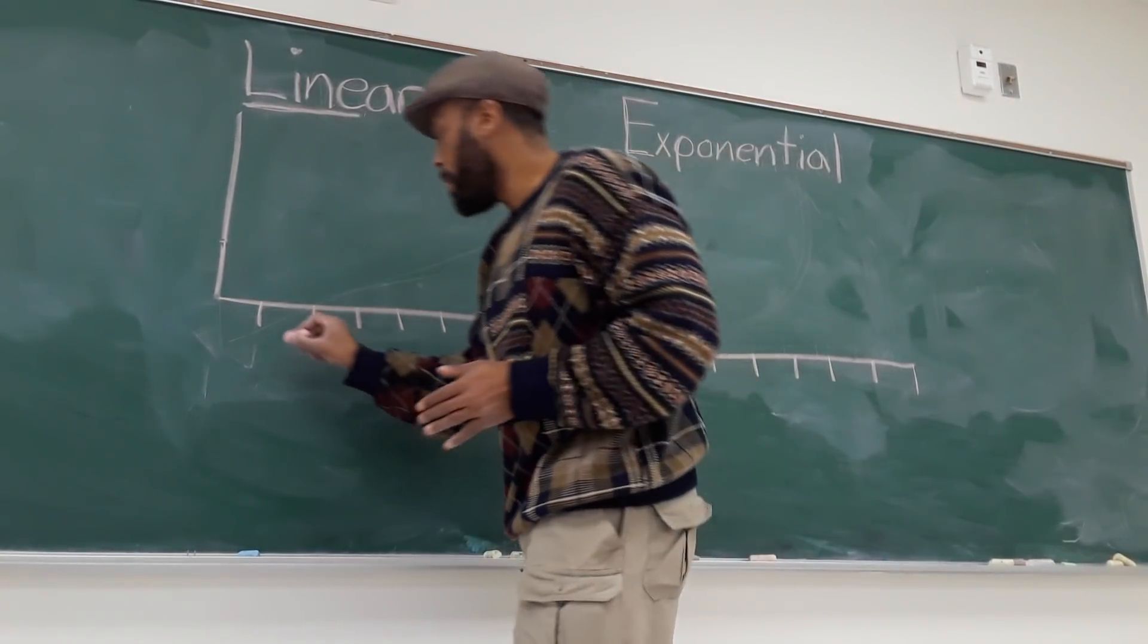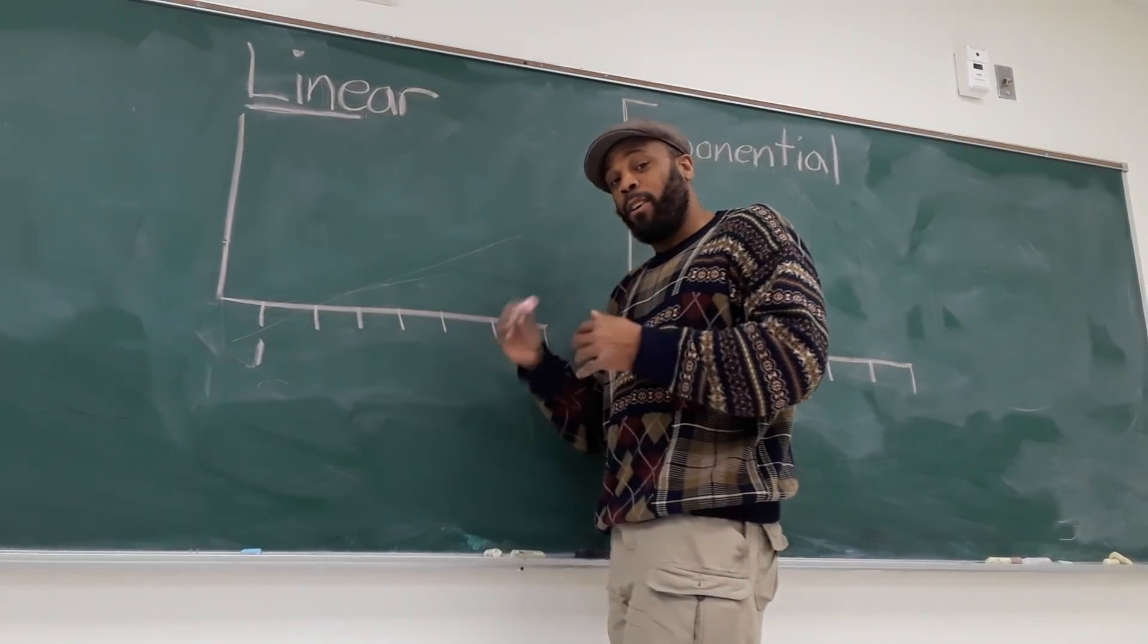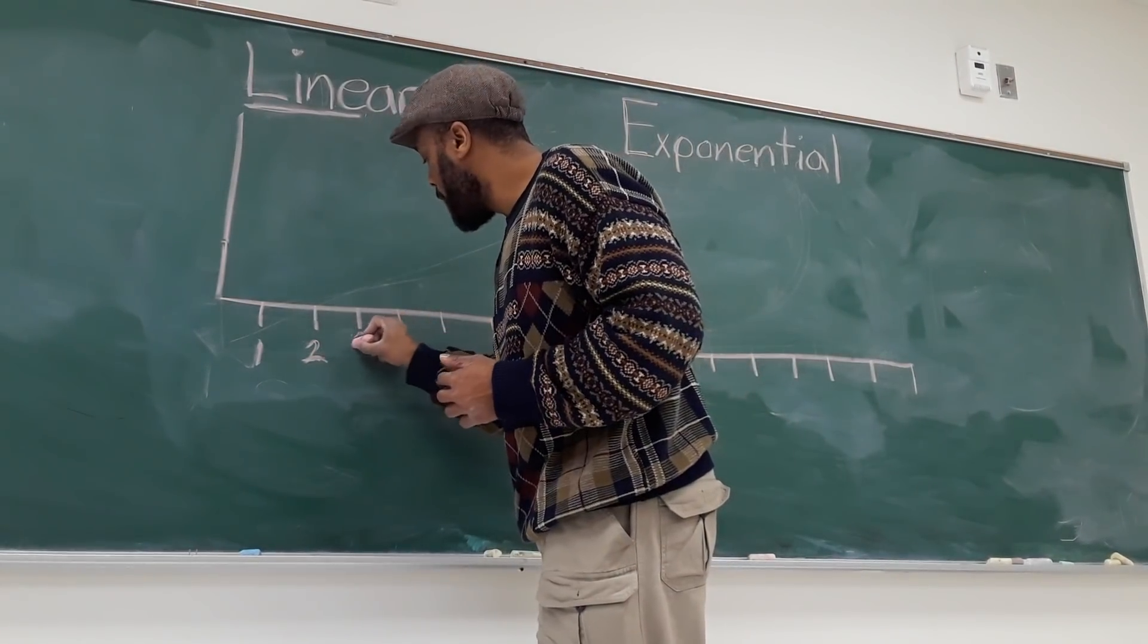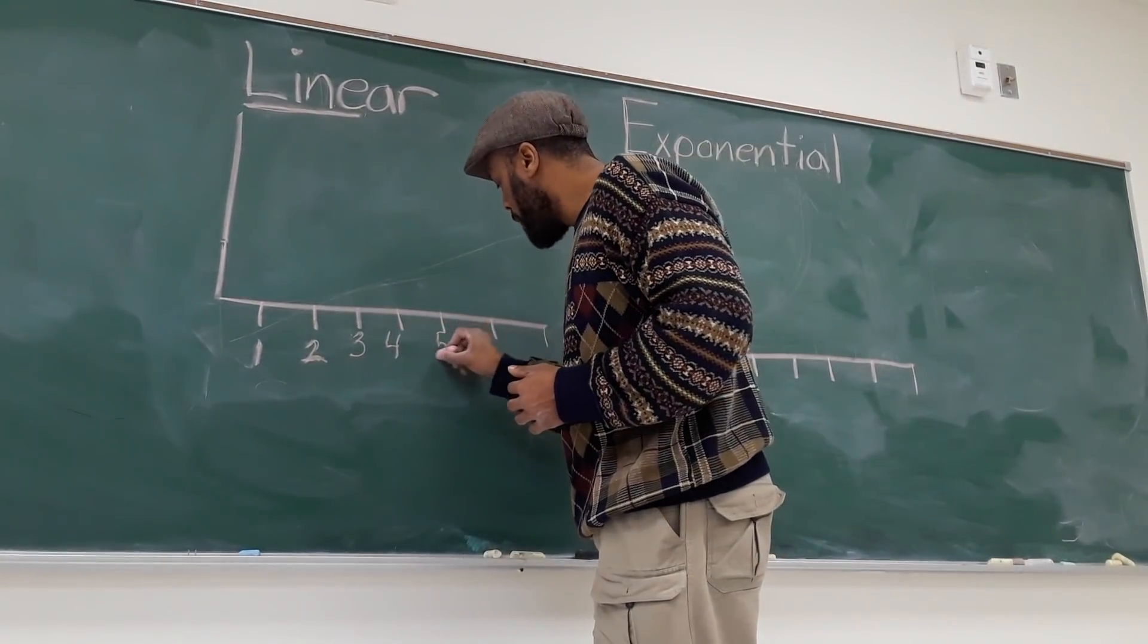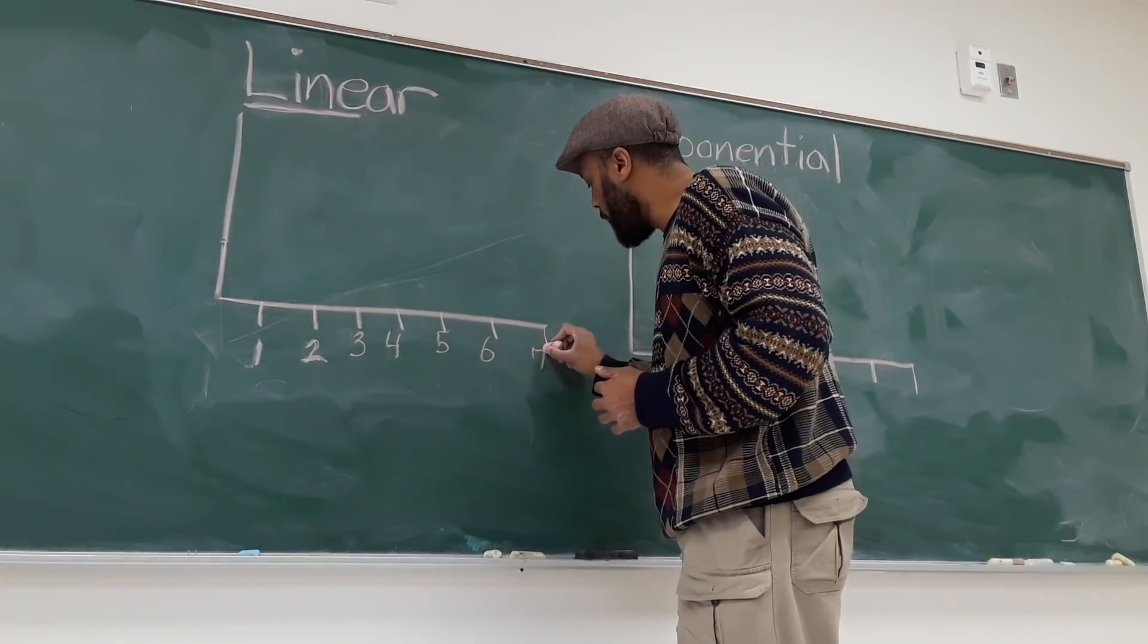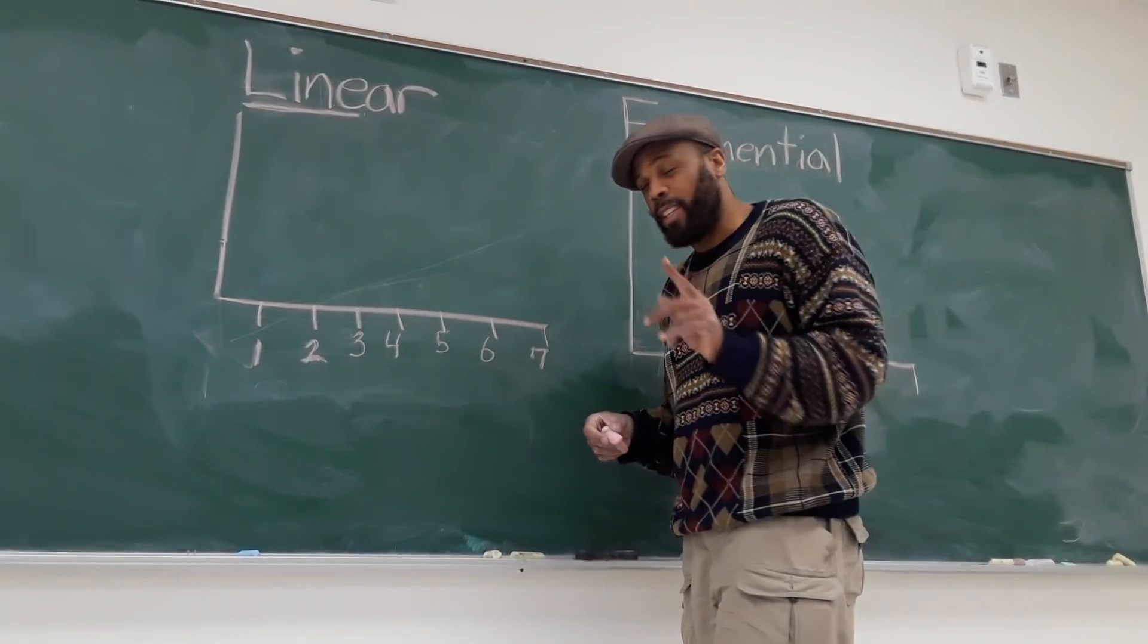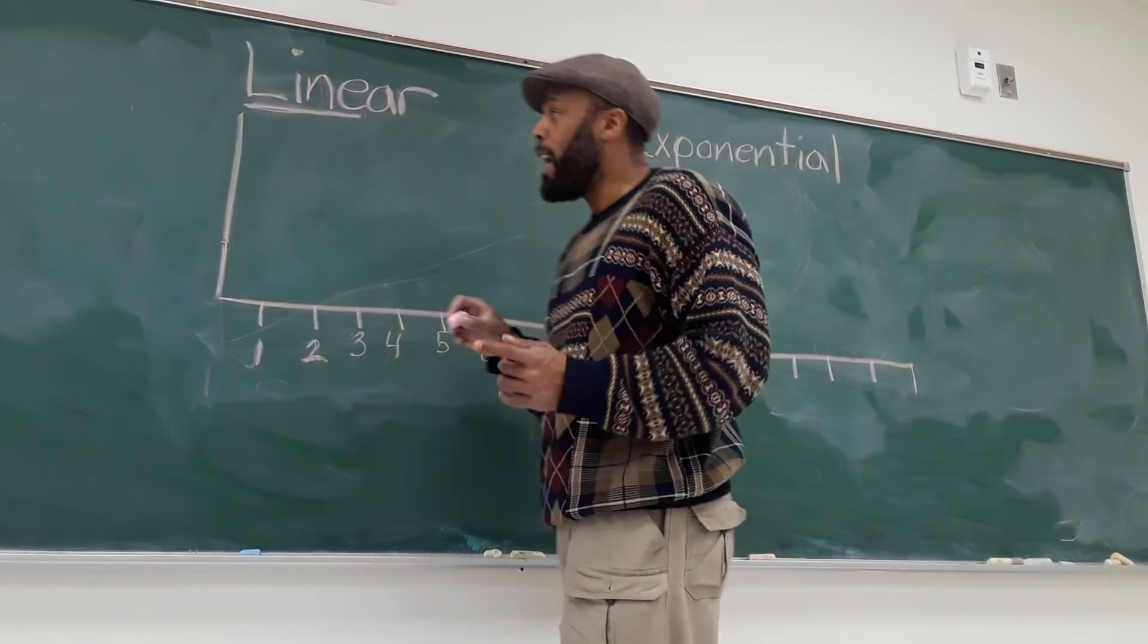For example, if you started off today with one person and you wanted to grow in a linear way, tomorrow you're going to have two people. The third day, three people. Four on the fourth day. Five people on the fifth day. Six on the sixth day. And by the end of the week, you're going to have seven people. The thing that was constant about this growth is you added one person each day. That was predictable and it was constant and it functions in a straight line.